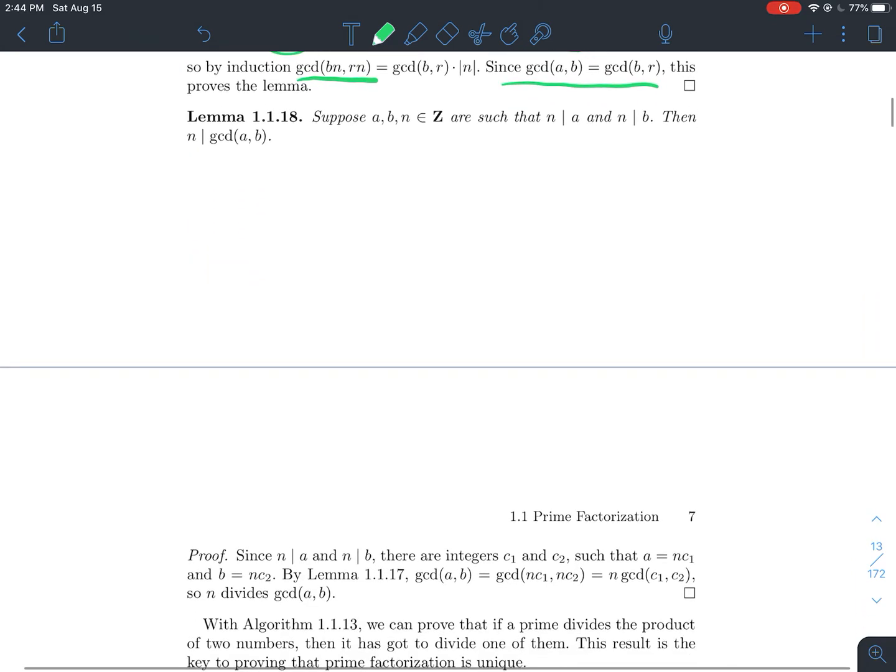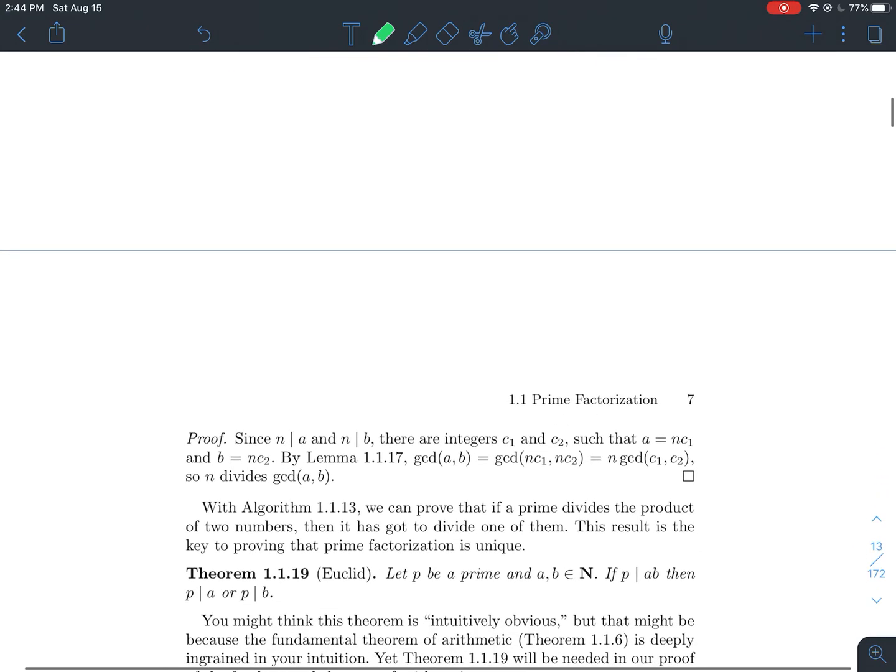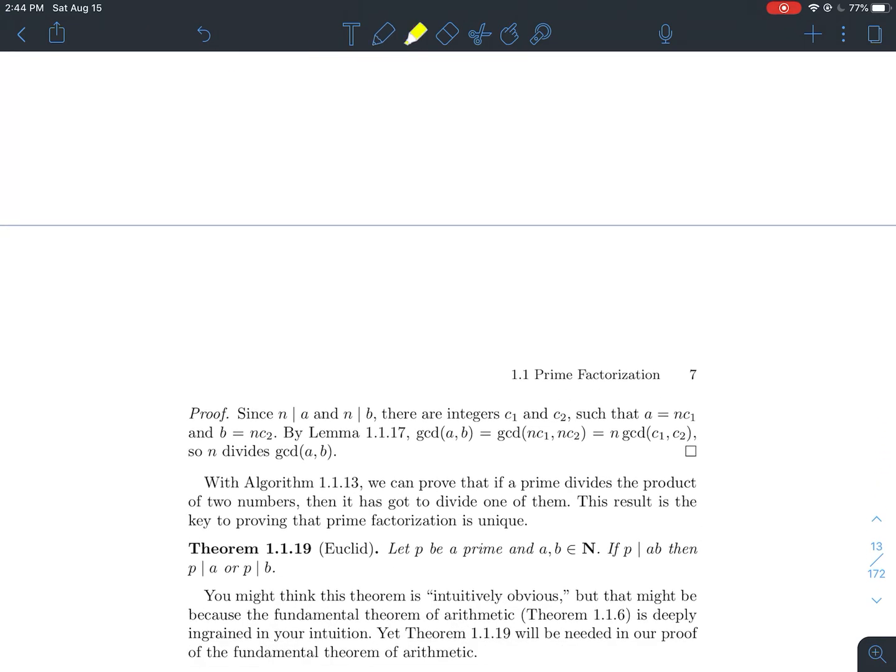Another lemma that we'll need here: if you've got three integers, and if n divides a and it divides b, then n has to divide the greatest common divisor of a and b as well. In particular, this is kind of a nice proof. Just apply the definition of what it means for n to divide both a and b. You get two integers where you get these two equations now.